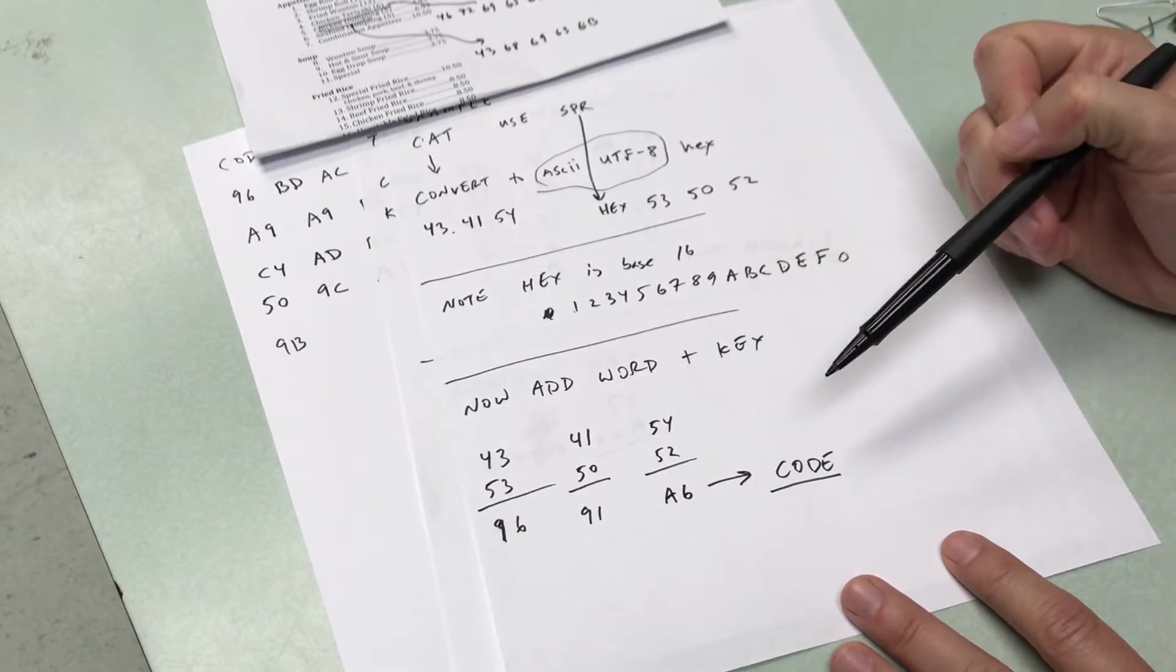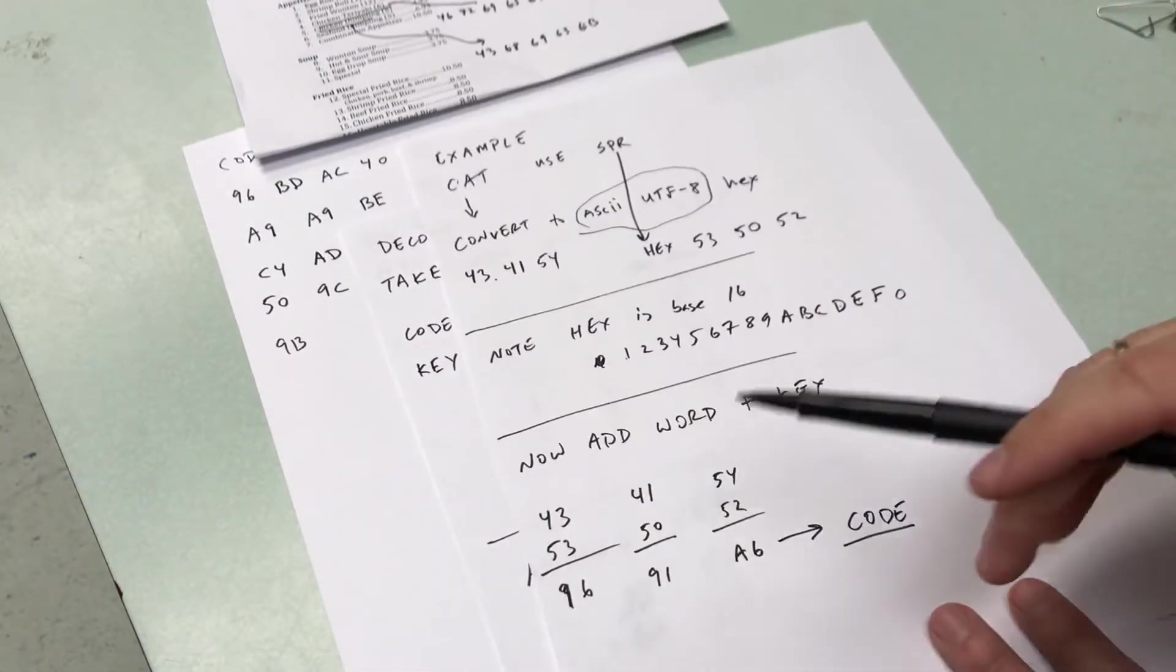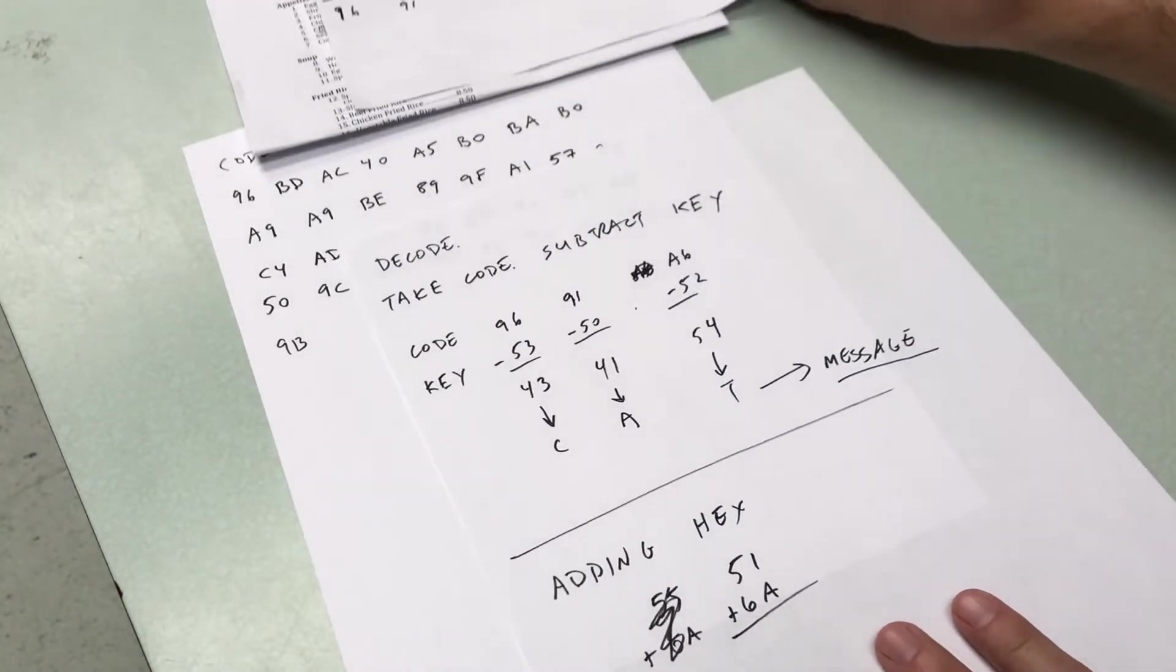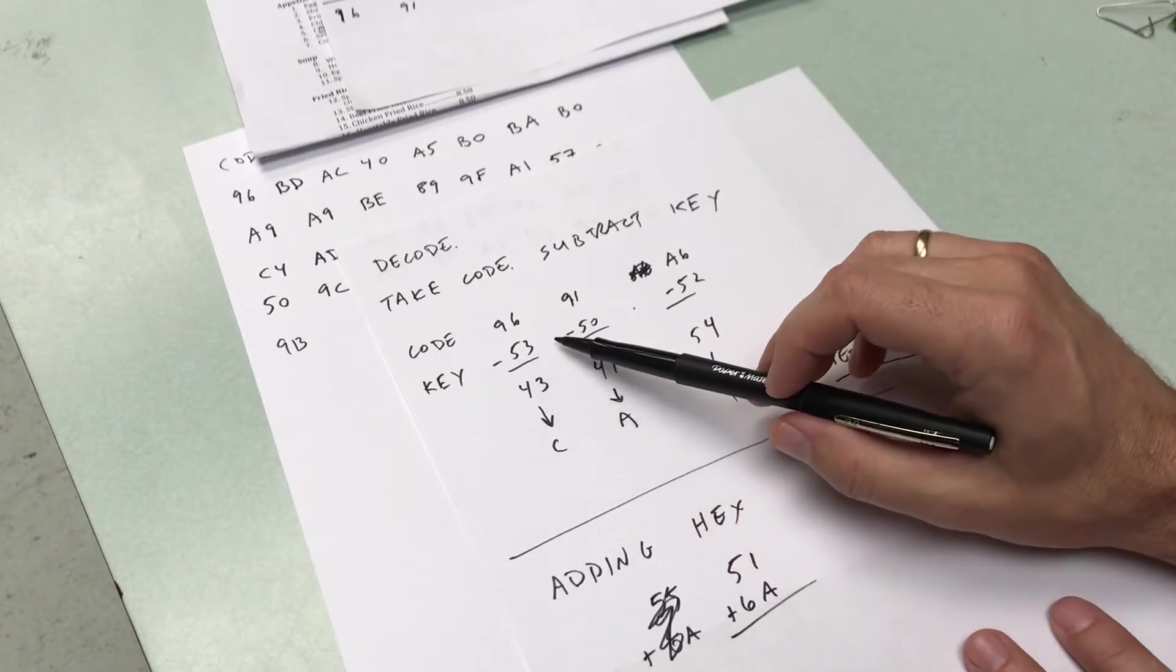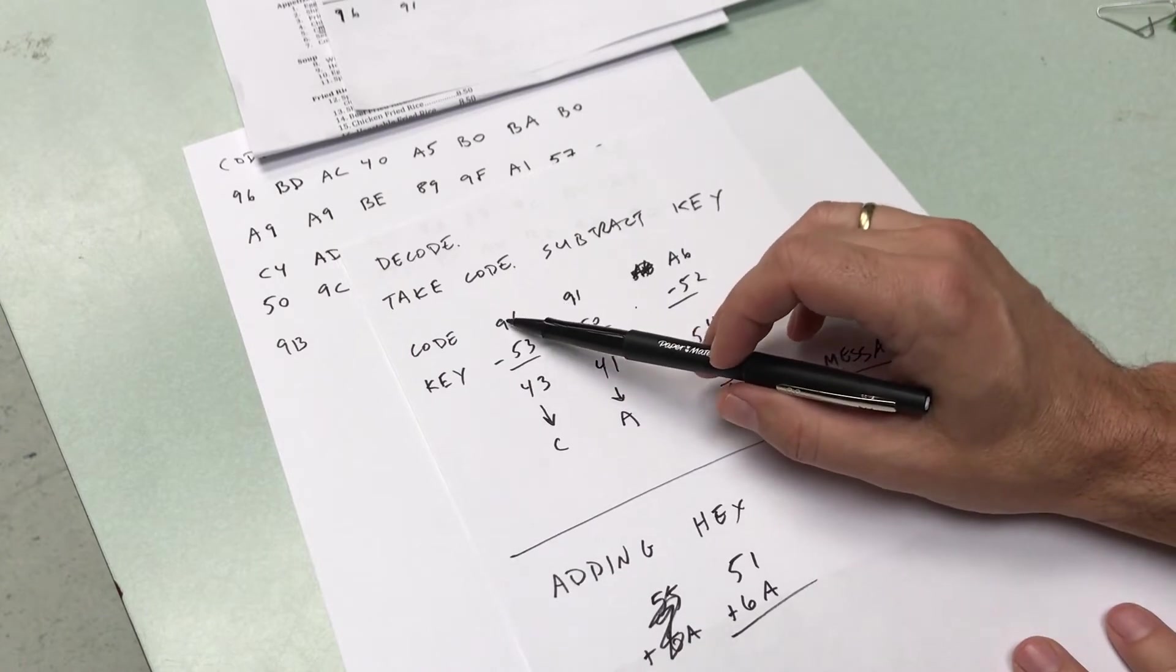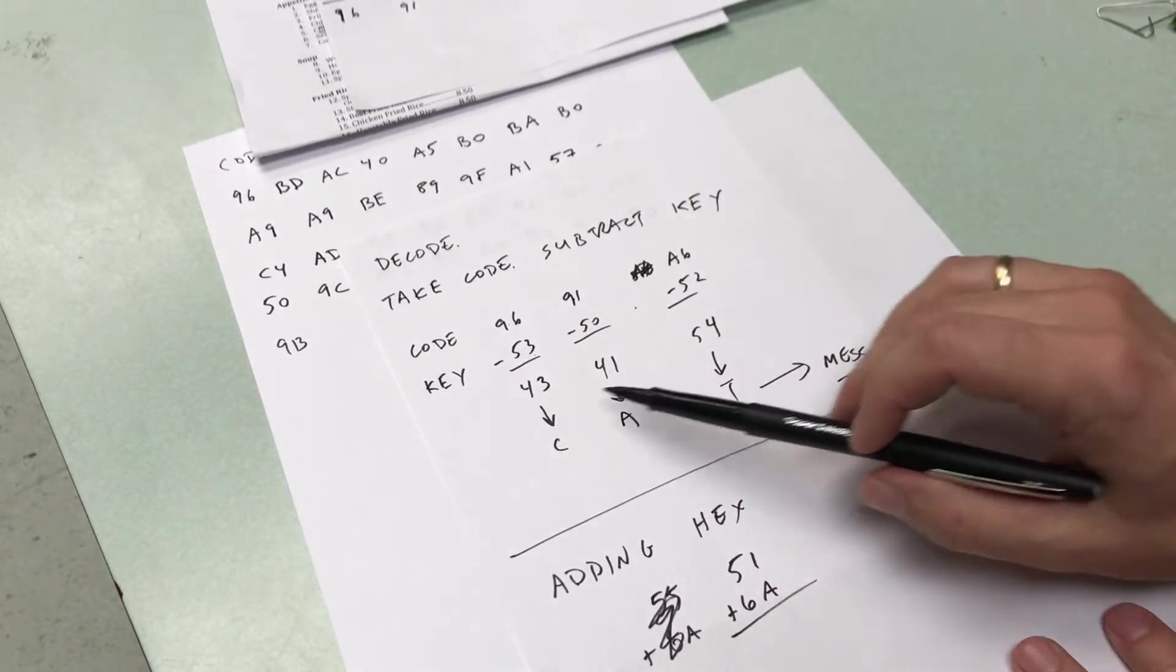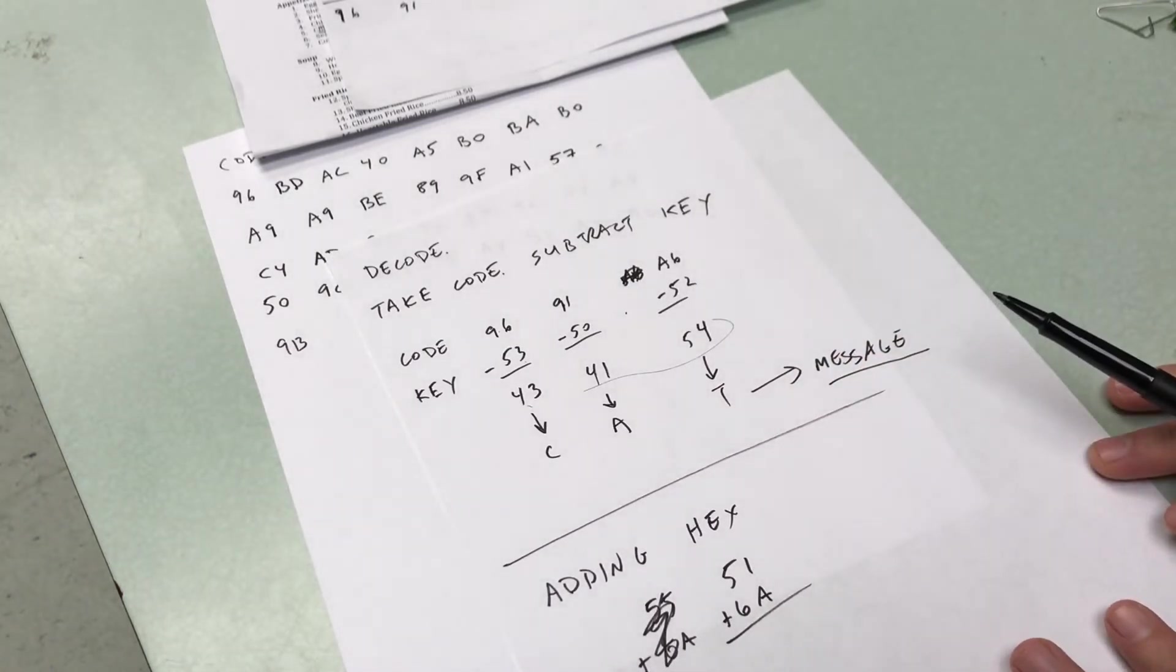Now to decode it, I just do the opposite. So that would be the code I would send. And the other person would know the book cipher, they would know those letters. So now I just do the opposite to solve the message. So I take my code, and then I look up the same key and I subtract it. This is what MacGyver Senior is going to be doing. So he's going to take the code, subtract the cipher for S for spring roll, 53 minus 50 minus 52, and you get back to these ASCII character numbers, which are those things at the end.